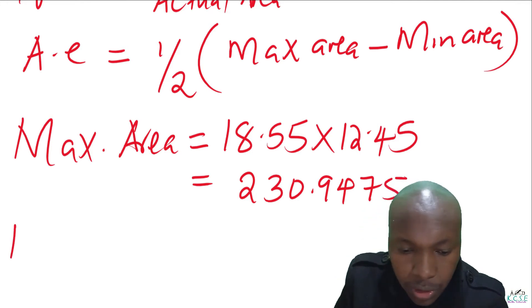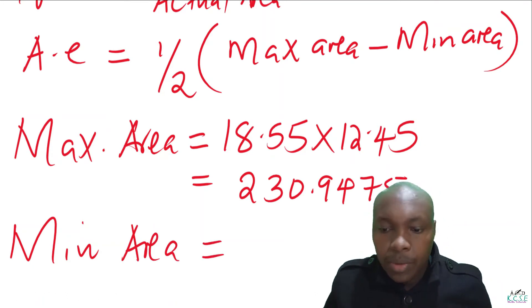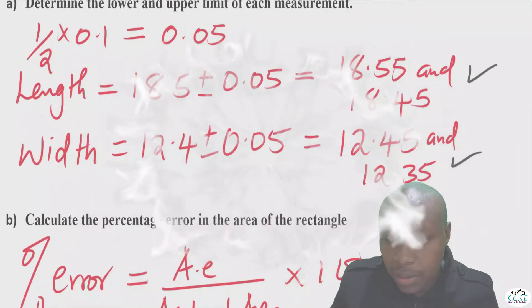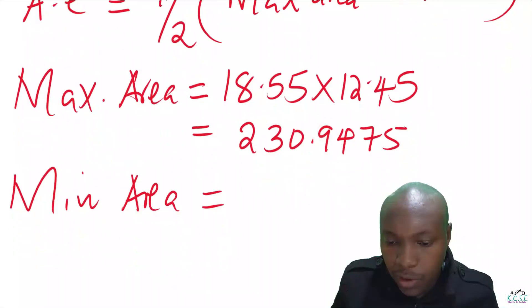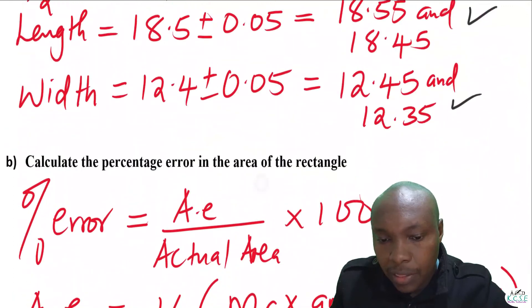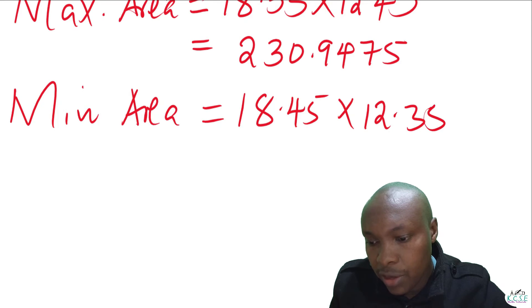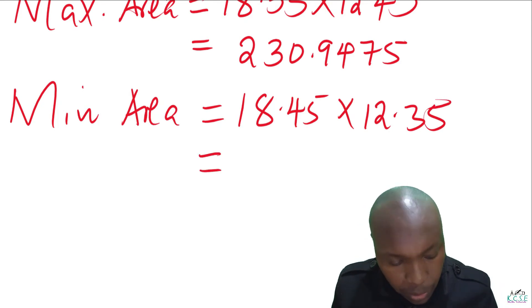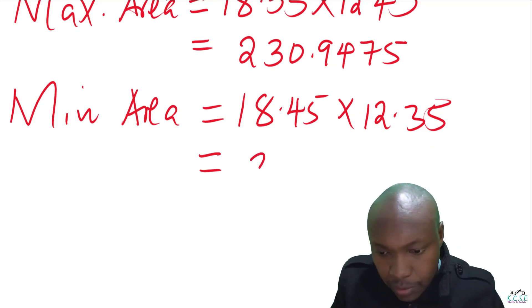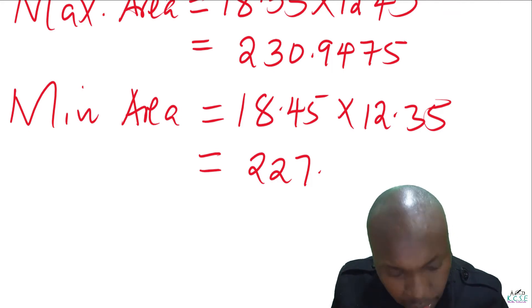For the minimum area, we use the lower limits. The lower limit for the length is 18.45 and for the width is 12.35. Multiplying these together using the calculator gives a minimum area of 227.8575.